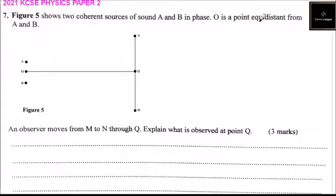O is a point equidistant from A and B. So we have our A, the source of sound, and B here. O is at the center, or midpoint. Then on the other side we have three points: we have M, we have Q, and we have N.